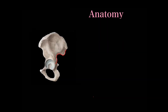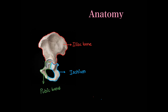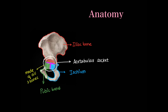We shall now separate each hip bone and see its anatomy and parts individually. Each hip bone is made up of three separate bones which fuse together: the iliac bone, the ischium, and the pubic bone. The acetabulum contains parts of all three bones forming the acetabular socket — it has parts of the iliac bone, the pubic bone, and the ischium. The cartilage joining all three bones is called the tri-radiate cartilage.